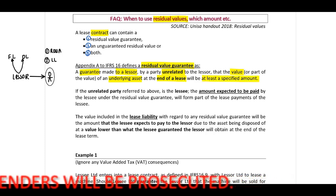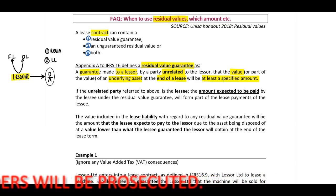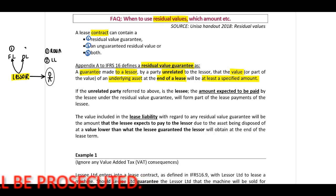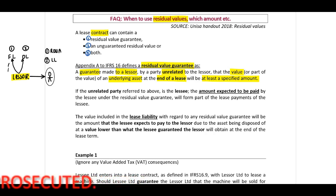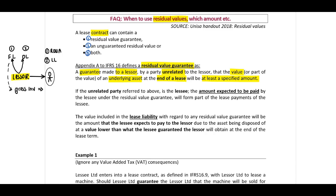Back to basics. If we look at our lessor, we need to determine: is this a finance lease or an operating lease? In terms of our finance lease, we need to determine our gross investment, and to be able to do this, we need our discount rate.